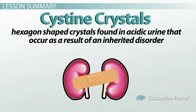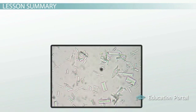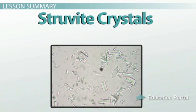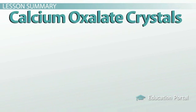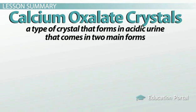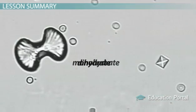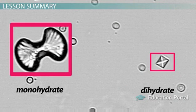People with cystine crystals may have an inability to reabsorb cystine through the kidneys. Coffin-lid-shaped crystals should clue you into struvite crystals, which are crystals that form in alkaline urine and are composed of magnesium, ammonium, and phosphate. These can be indicative of a urinary tract infection. If you encounter envelope- or dumbbell-shaped crystals instead, then calcium oxalate crystals — a type of crystal that forms in acidic urine and comes in two main forms — should be your main suspicion. The calcium oxalate monohydrate crystals look like dumbbells and indicate potential antifreeze poisoning.